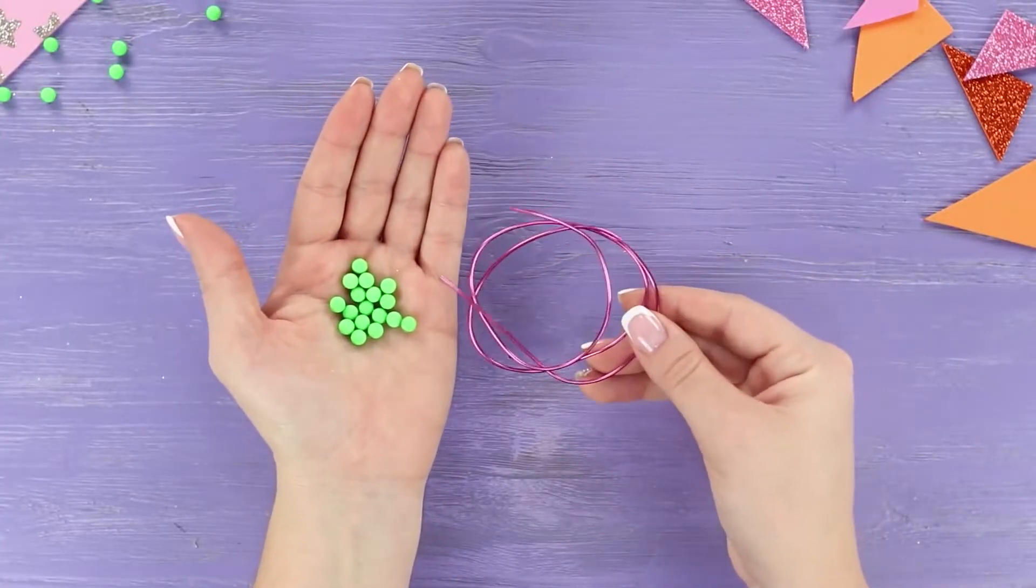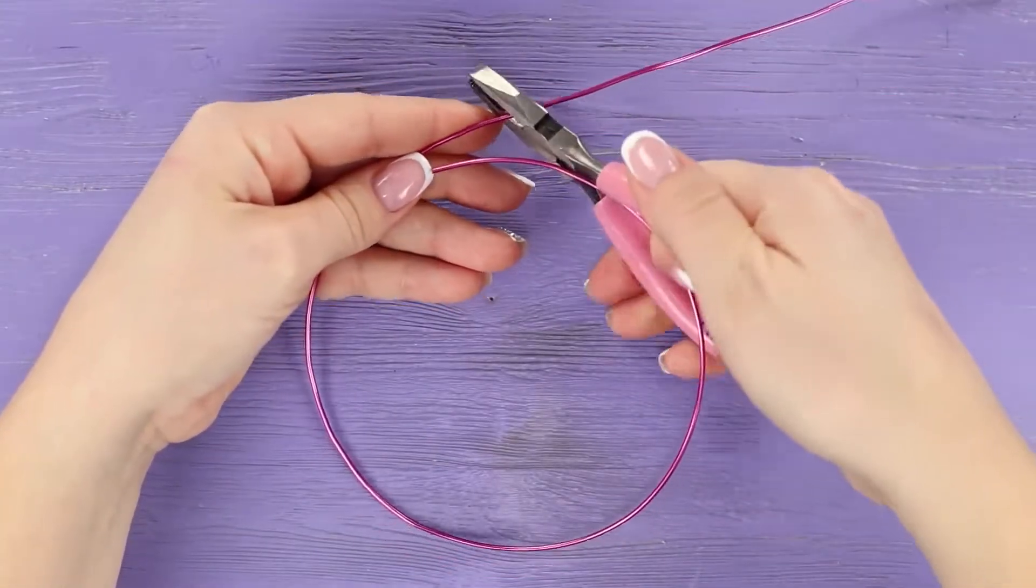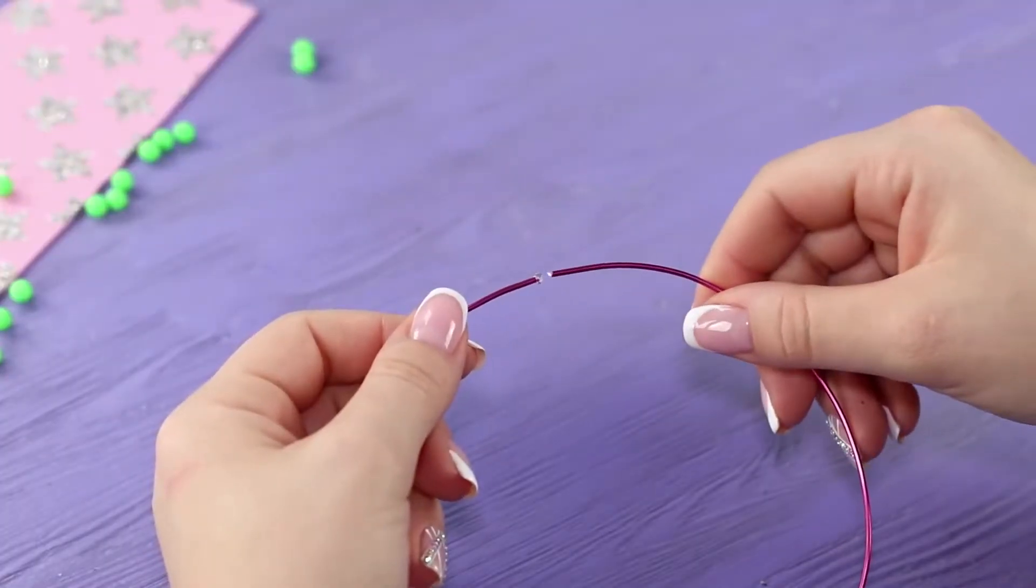For the first life hack, you will need a wire and some beads. Make a circle from the wire and fasten the ends with hot glue.